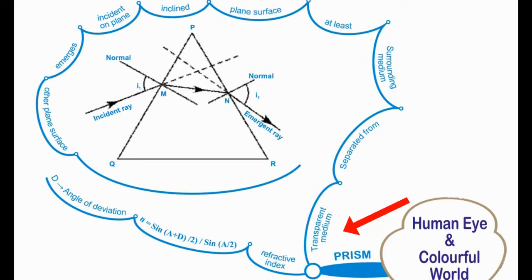As shown in the figure, the refractive index of prism is given by small n is equal to sine of (A plus D) by 2, by sine of A by 2, where D is the angle of deviation.